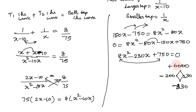The two numbers are 200 and 30, since 200 times 30 equals 6000 and 200 plus 30 equals 230.